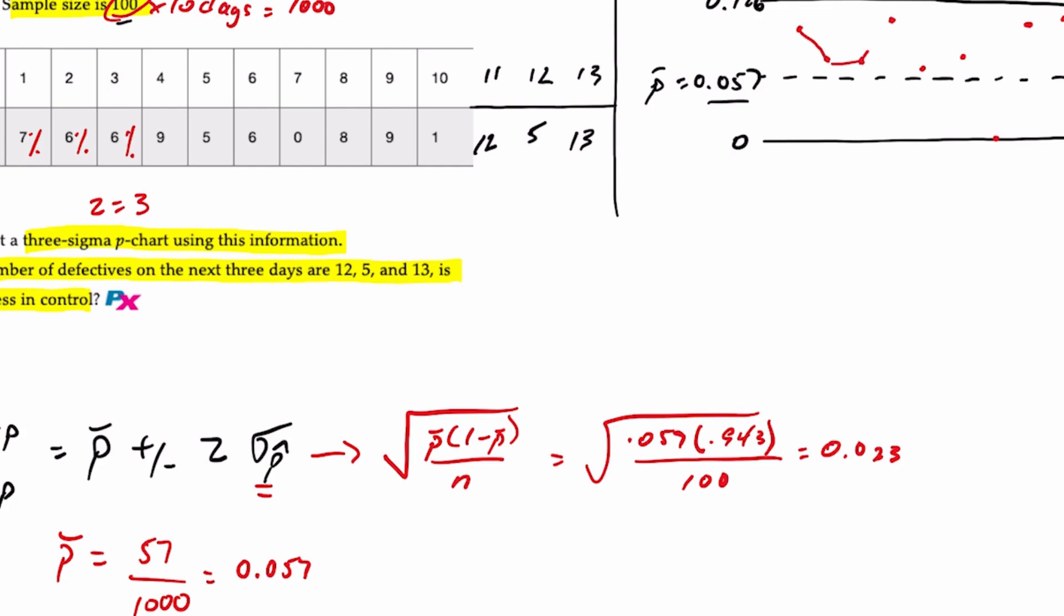So if we were to join our dots, here's what we have. Is the process in control? No, the process is not in control, because something on day 13 caused there to be more defectives than is allowable for our process.